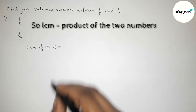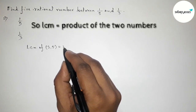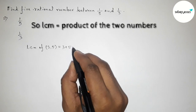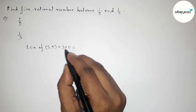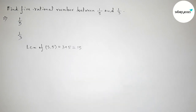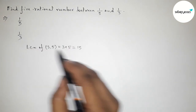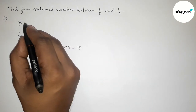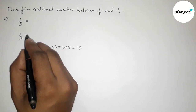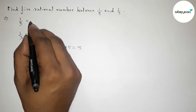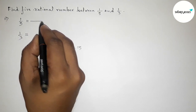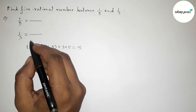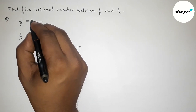Since 3 and 5 are prime to each other, the LCM will be the product of the two numbers: 3 × 5 = 15. So we have to make both denominators equal to 15.